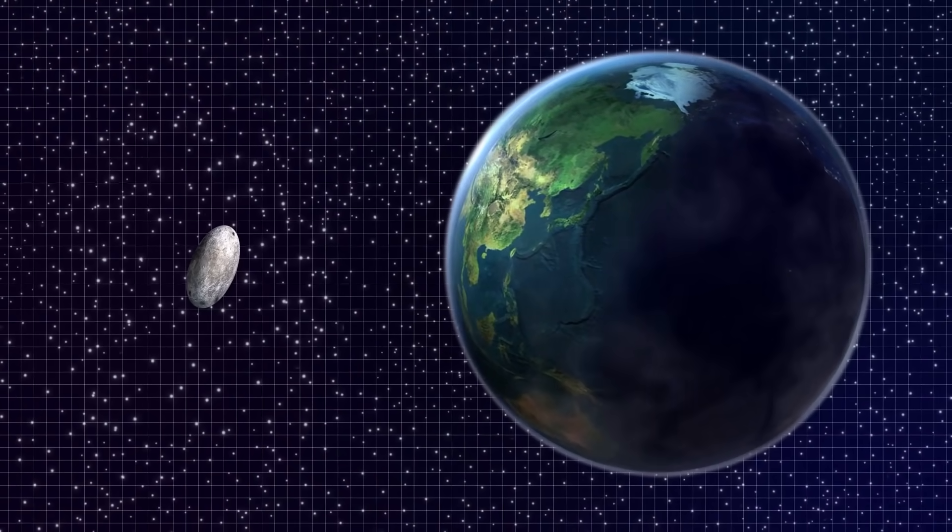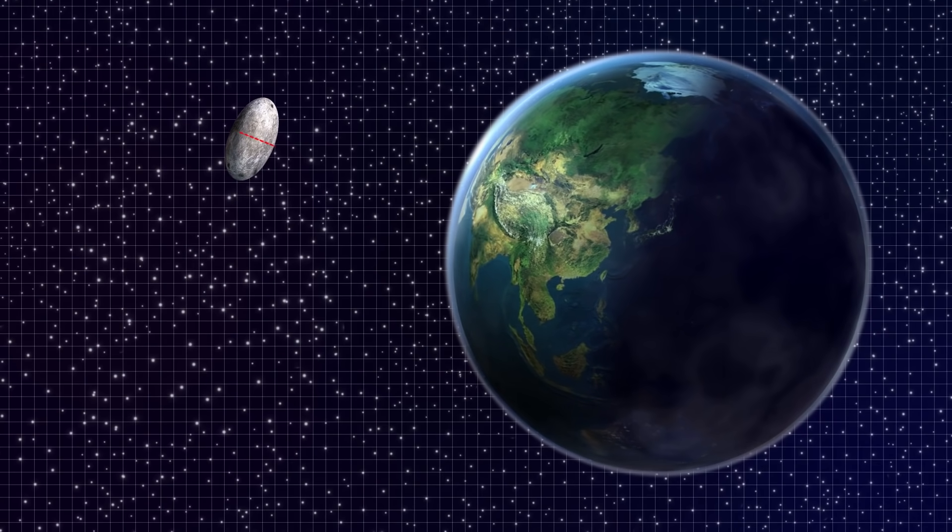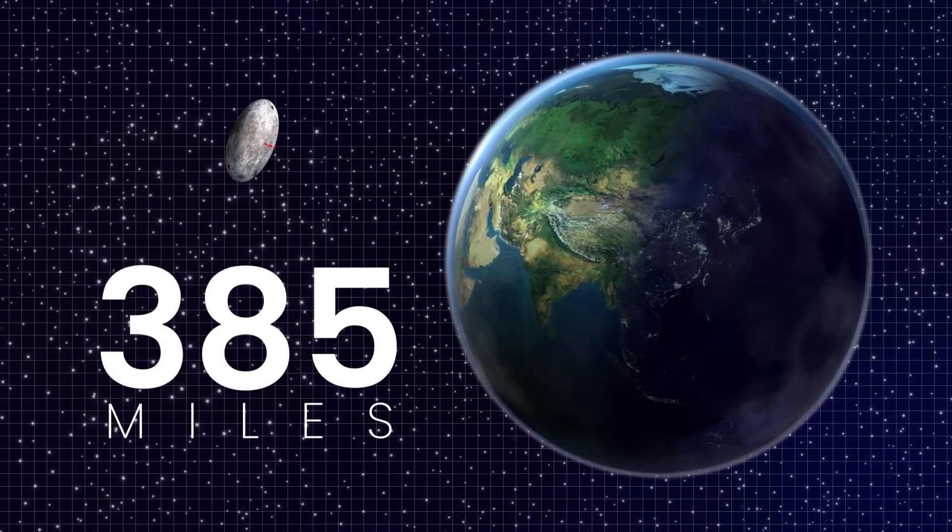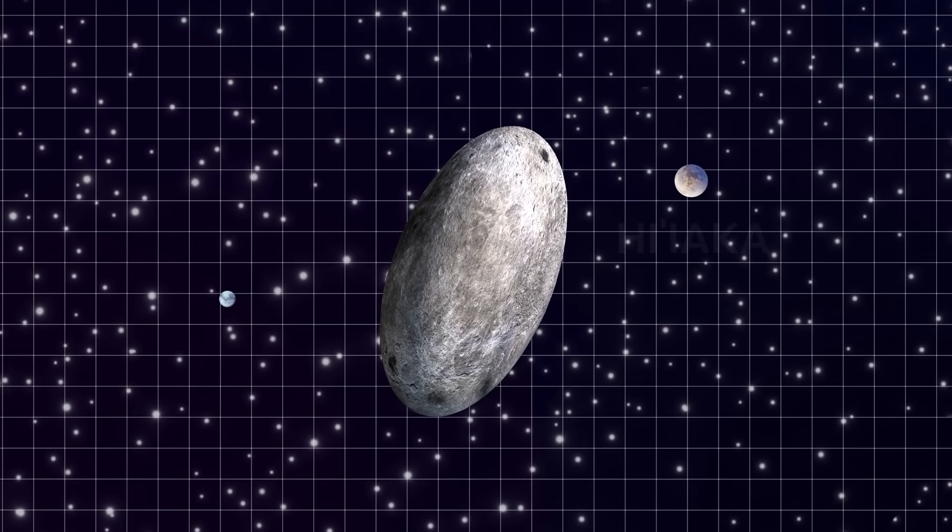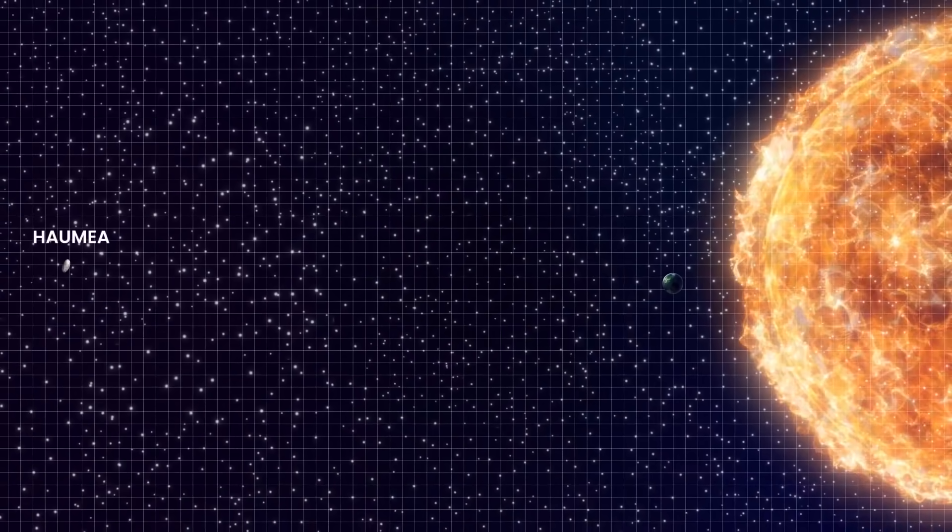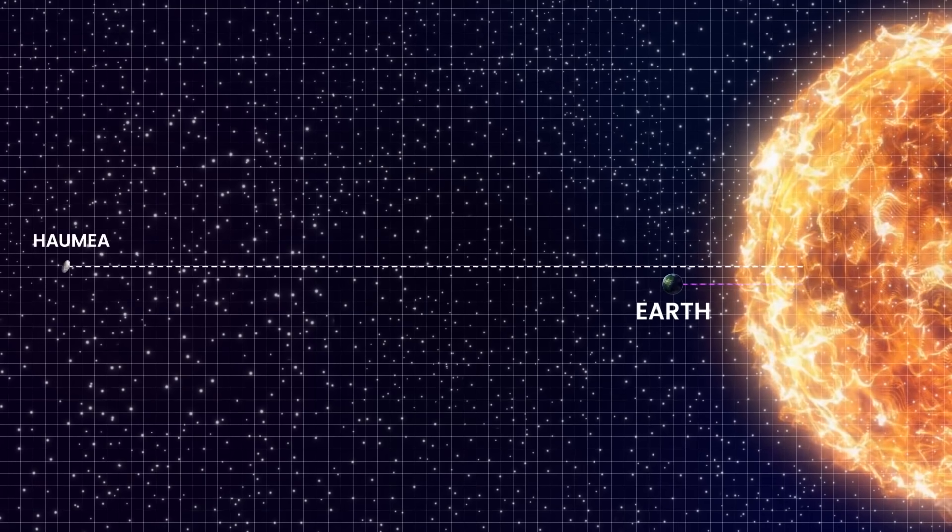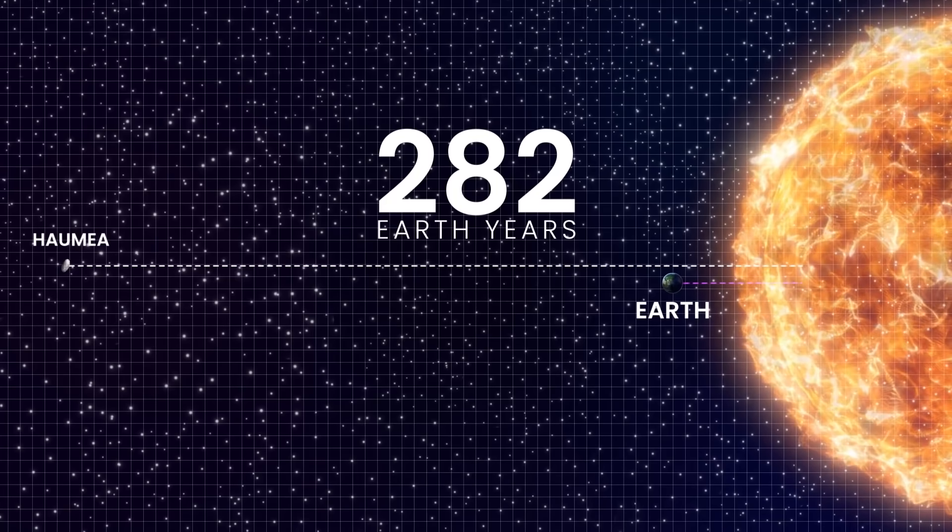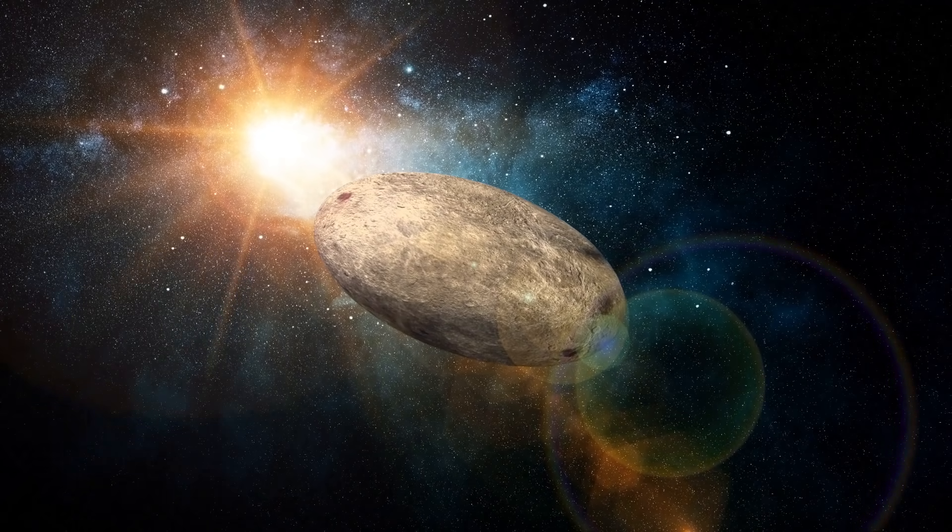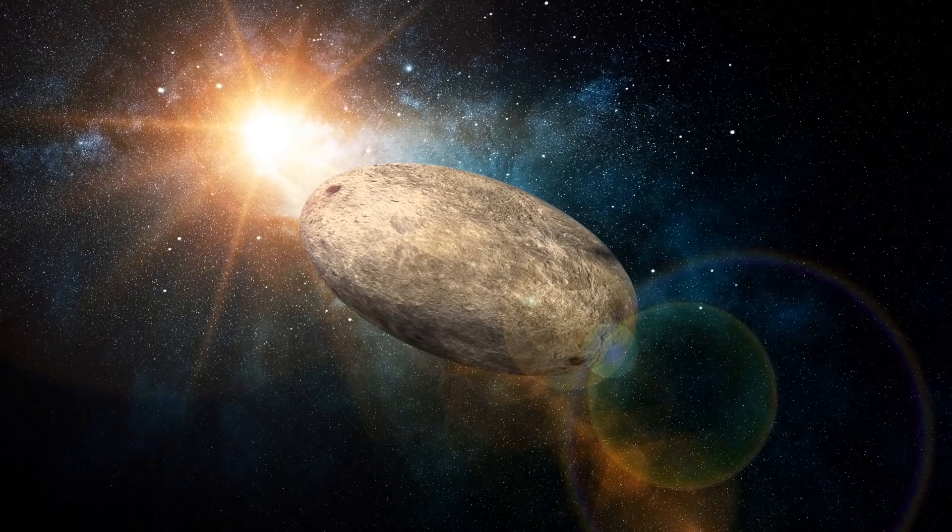Haumea is 10 times smaller than Earth, with a radius of about 385 miles, and has two moons, Namaka and Hiyaka. Due to its distance from the Sun, almost 43 times Earth's distance from it, one orbital period is approximately 282 Earth years. But a recent discovery made Haumea an even more interesting space object.